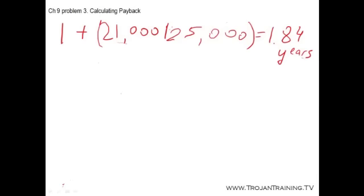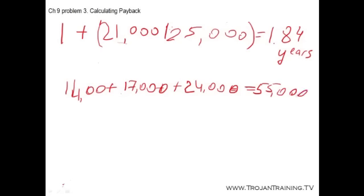Project B has cash flows of the total of 55,000 after the first three years. So we take the sum of the cash flows for the first three years. That's 14,000 plus 17,000 plus 24,000. So that gives us 55,000 during the first three years. The cash flows are still short by 5,000 of recapturing the initial investment. The initial investment is 60,000 in this case. So the payback period for Project B is three years plus whatever we need. We need 5,000.